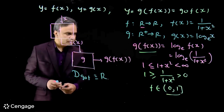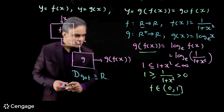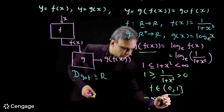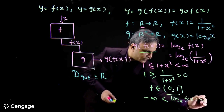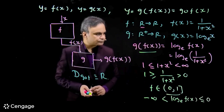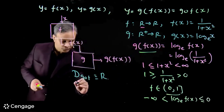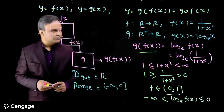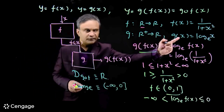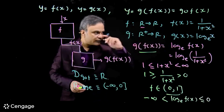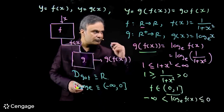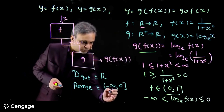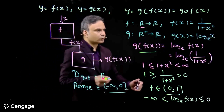Now what will be the range of this composite function? Since f(x) belongs to (0, 1], we apply log. When f(x) approaches 0, its log value approaches minus infinity. So we have −∞ < log(f(x)) ≤ 0, since log 1 = 0. Therefore the range of g(f(x)) is the interval (−∞, 0]. This is a subset of the range of g(x), which is R.